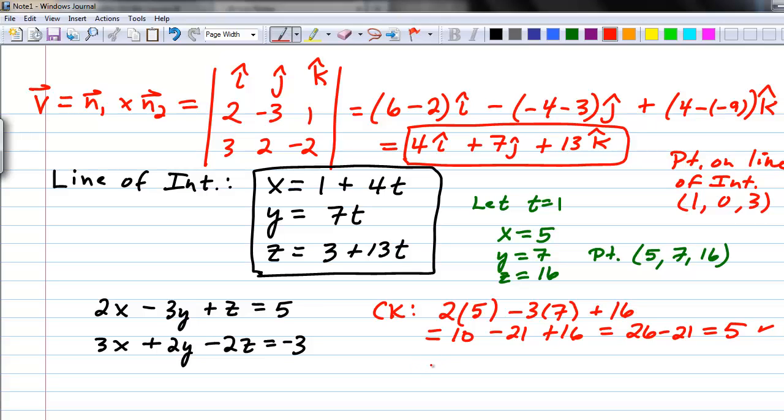For the second one, we're going to put in that point into the second equation. 3 times 5 plus 2 times 7 minus 2 times 16, the z value, equals 15 plus 14 minus 32. 15 plus 14 is 29 minus 32 gives me negative 3. That checks as well.